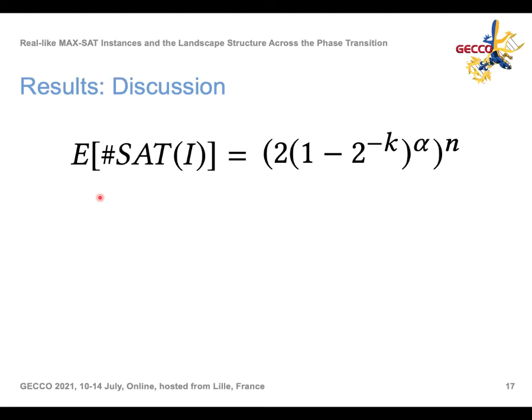To shed light on why the landscape changes around the phase transition, we compute the expected number of assignments satisfying the instance. This expression, which is well known, depends on n, k, and alpha. As alpha gradually increases, this expected value decreases, meaning the landscape changes continuously. There is a critical value of alpha where the SAT probability changes abruptly as n increases, but the landscape exhibits continuous behavior, as observed in the figures.